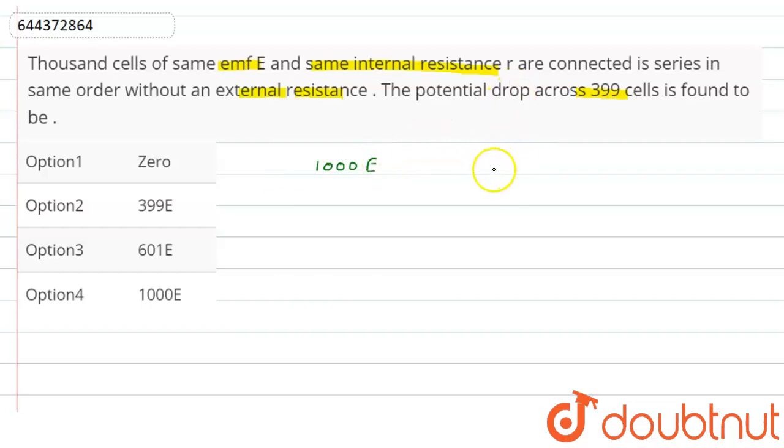So current will be equal to 1000E by 1000r, which is equal to E by r.